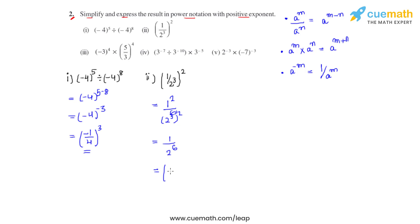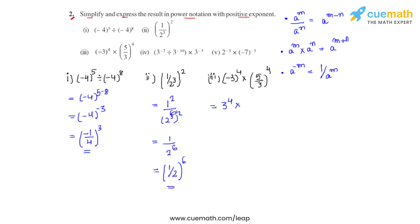So the whole expression can be written as 1 over 2, whole raised to 6. For the third bit, we have negative 3 raised to 4 times 5 over 3, whole raised to 4. Since the negative is raised to an even power it becomes positive, giving us 3 raised to 4. The power is applied individually to the numerator and denominator of the second term: 5 raised to 4 divided by 3 raised to 4. The 3 raised to 4 terms cancel, leaving 5 raised to 4 as the answer.